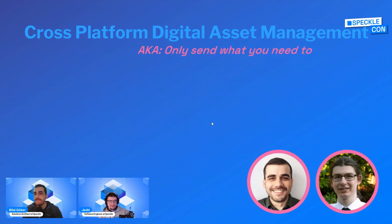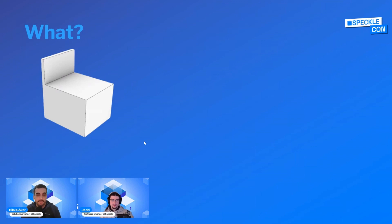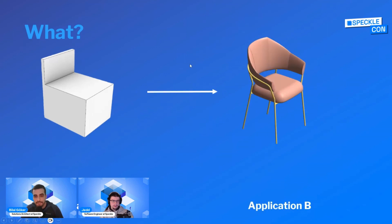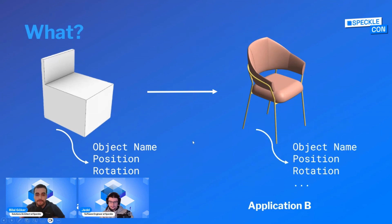What do we mean by cross-platform asset management? Let's say you have your object in application A and you need to transfer this data into another application — application B. But you don't need everything. You only need partial information, maybe the object's name, its position, its rotation, or some other attribute, and using those attributes you want to recreate those elements within application B.